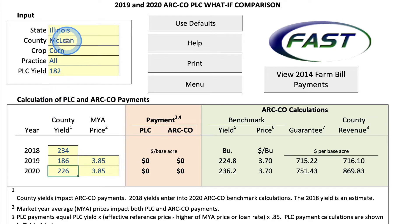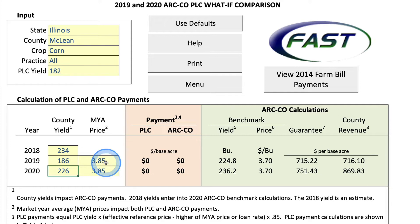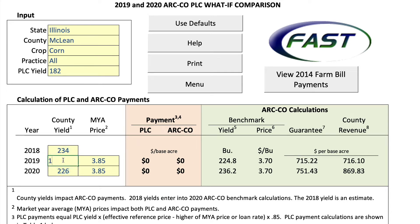This is for Illinois corn in McLean County. Right now we have a zero dollar ARC county payment and a $3.85 market year average price, which is what USDA is currently projecting. What we're going to do is find the county yield below which we trigger payments. Here we have 186 bushels per acre, which does not trigger a payment. If we lower that one bushel, we begin to trigger ARC county payments. So we will call 186 our break-even yield — below that we're going to get ARC county payments.